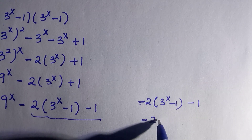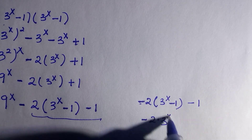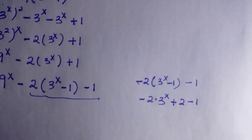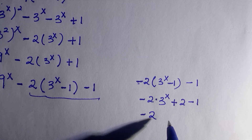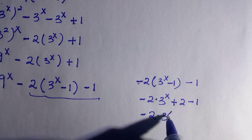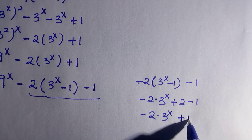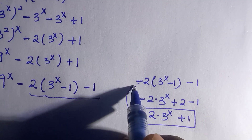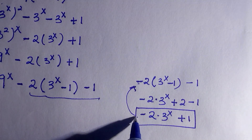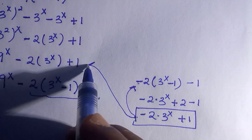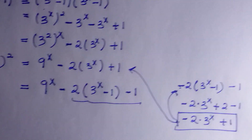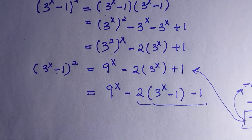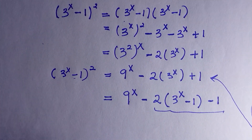Opening the bracket: 2 times 3 to the power of x, plus 2, minus 1, gives negative 2 times 3^x plus 1. So this assumption is accurate — the expressions match what we have on this line.